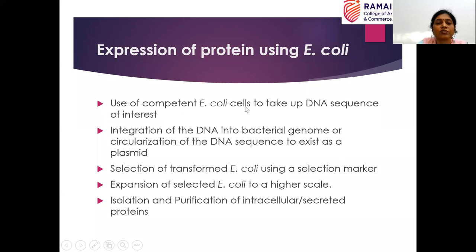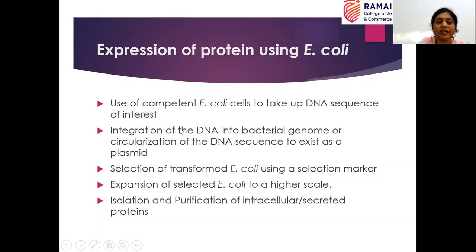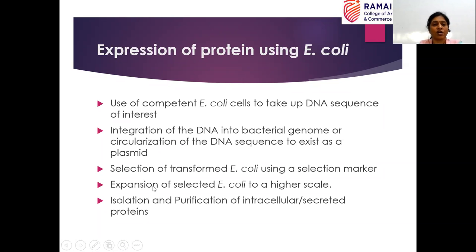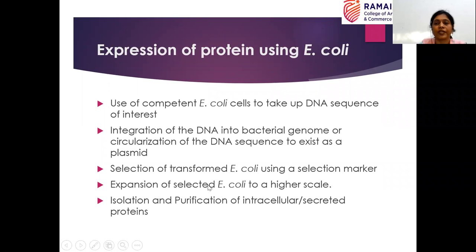To quickly recap: first we use competent E. coli cells to take up the DNA sequence of interest — that is transformation. Then the transformed DNA in the host organism may get integrated into the bacterial genome, or the DNA sequence might exist as a plasmid. Then you go for selection of transformed E. coli using selection markers. Once the transformants are selected, you expand the selected E. coli to scale up the DNA. Then from there you go for isolation and purification of protein, whether it is the intracellular or the secreted protein.